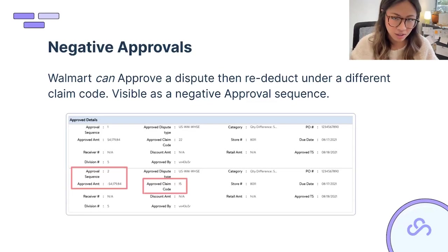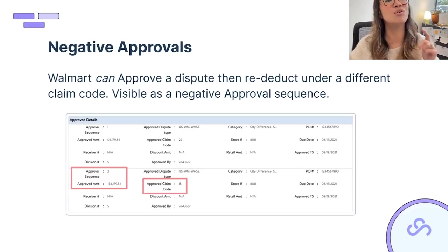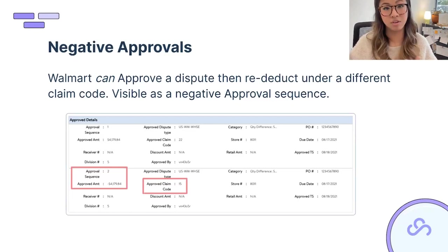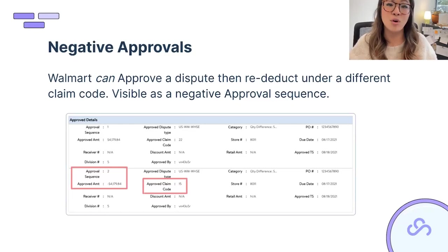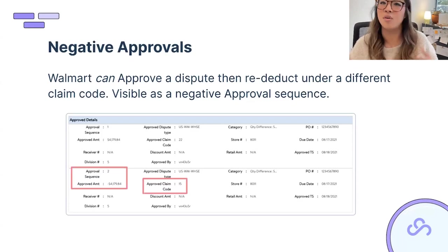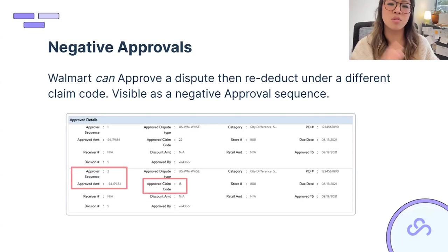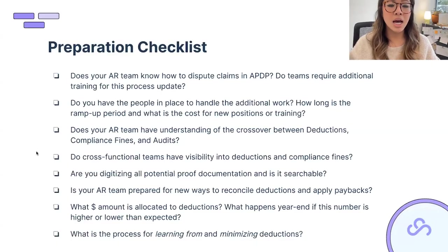Some suppliers literally photograph every single pallet and master case they ship, so if they get a Code 14 or 15, they can show what the pallet looked like when it left their dock. It's more manual, but it's something we've seen work. Of course, you have to weigh the cost-benefit: if you're only getting one random Code 14 a week for a few hundred dollars, it may not be worth it. But if you're getting rampant Code 14s and 15s, it may be worth investing in the process.